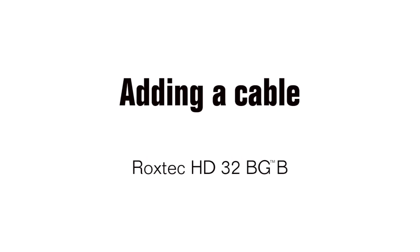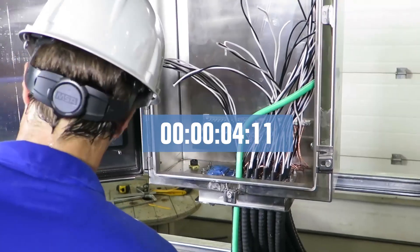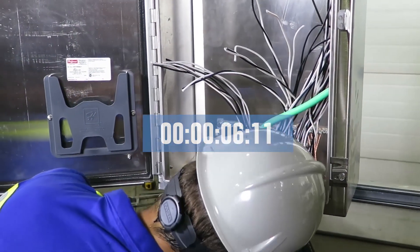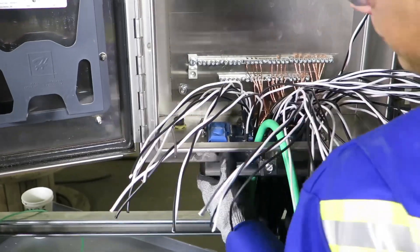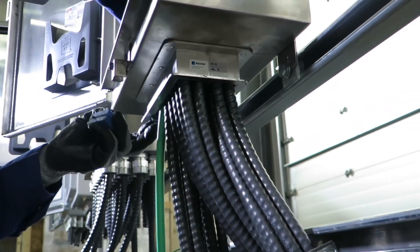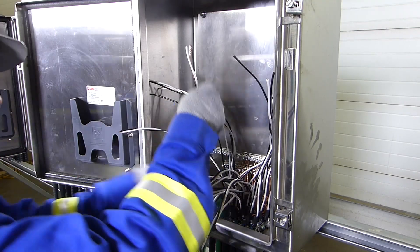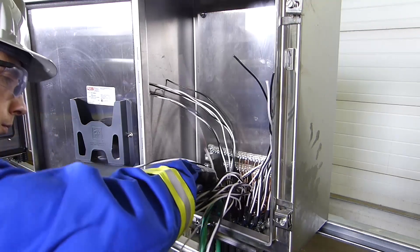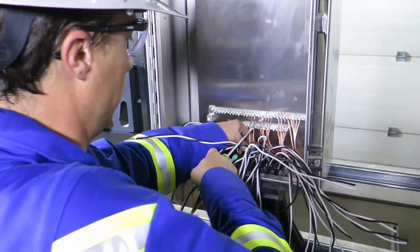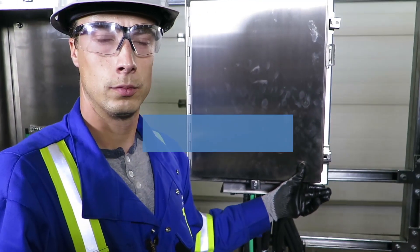Matt will add a cable to the stainless steel enclosure with the Roxtec HD32 seal. It has an optional built-in spare capacity for future needs. This means that Matt can open up the seal, remove a spare module, use it to add the new cable, and then reseal it all again. He then strips the cable to connect it to the ground bar at the back. He finishes the additional installation in six minutes and 39 seconds.